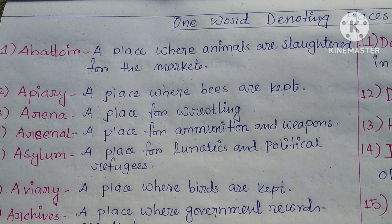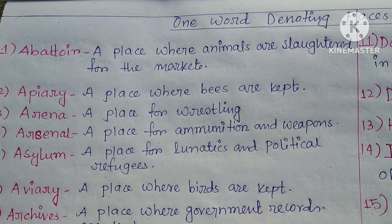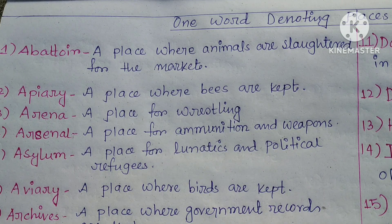Arsenal — a place for ammunition and weapons. Ammunition means the quantity of bullets and similar items. (Joke: a place for biryani — just kidding!)